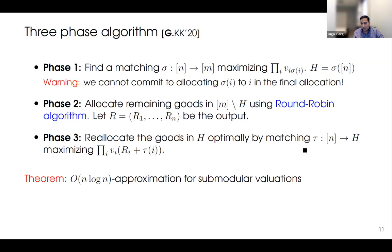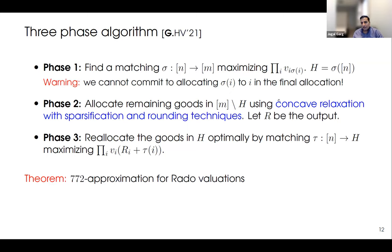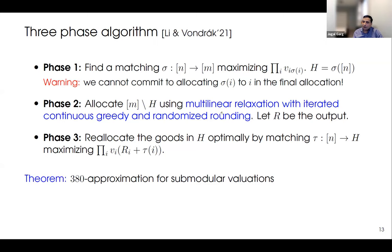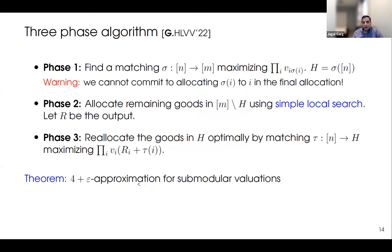We show this gives an O(n log n)-approximation for submodular. In the next paper, we replaced the round-robin algorithm with concave relaxations for Rado valuations, applied sparsification to sparsify the fractional solution, and did some rounding, giving a constant-factor algorithm. Phase one and three remain the same. Then Lee and Vondrák put a multilinear relaxation in phase two — since we don't have a concave relaxation for submodular — and used the iterated continuous greedy algorithm with randomized rounding, getting a randomized 380-approximation. Finally, using a simple local search in phase two, we get a deterministic 4-approximation for submodular.